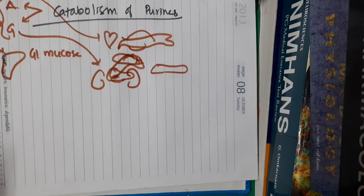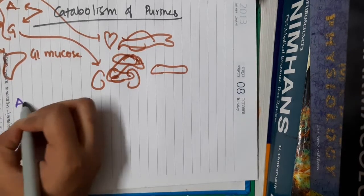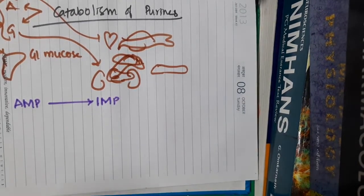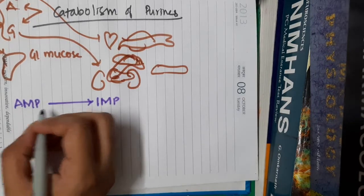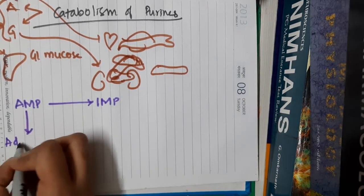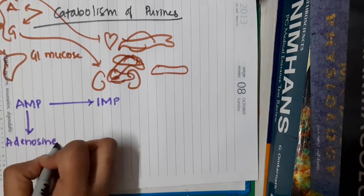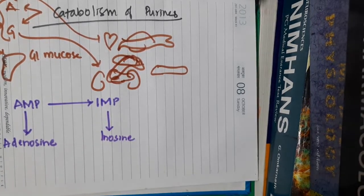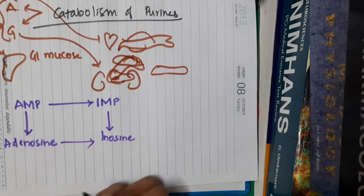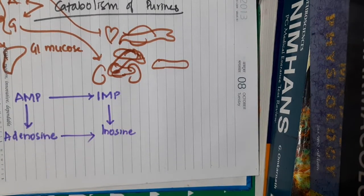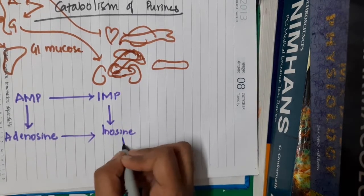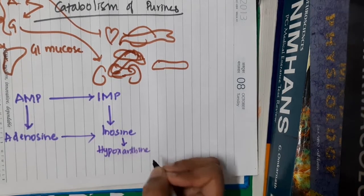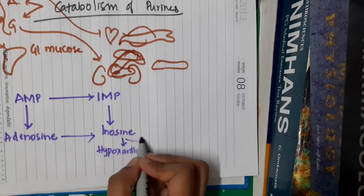In the pathway, adenosine monophosphate (AMP), in the presence of AMP deaminase, forms inosine monophosphate (IMP). AMP in the presence of nucleotidase forms adenosine. IMP is converted to inosine, also in the presence of nucleotidase. Adenosine, in the presence of adenosine deaminase, forms inosine. This inosine forms hypoxanthine, and ribose 1-phosphate is released during this process.